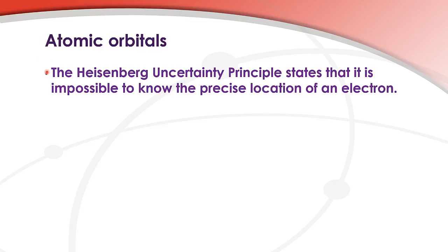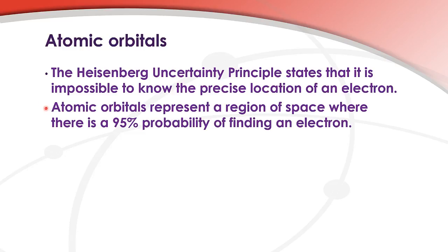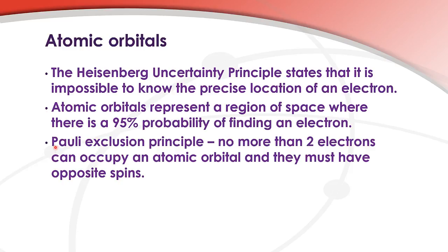Atomic orbitals. The Heisenberg uncertainty principle states that it is impossible to know the precise location of an electron. Atomic orbitals represent a region of space where there is a 95% probability of finding an electron. The Pauli exclusion principle states that no more than two electrons can occupy an atomic orbital and they must have opposite spins.